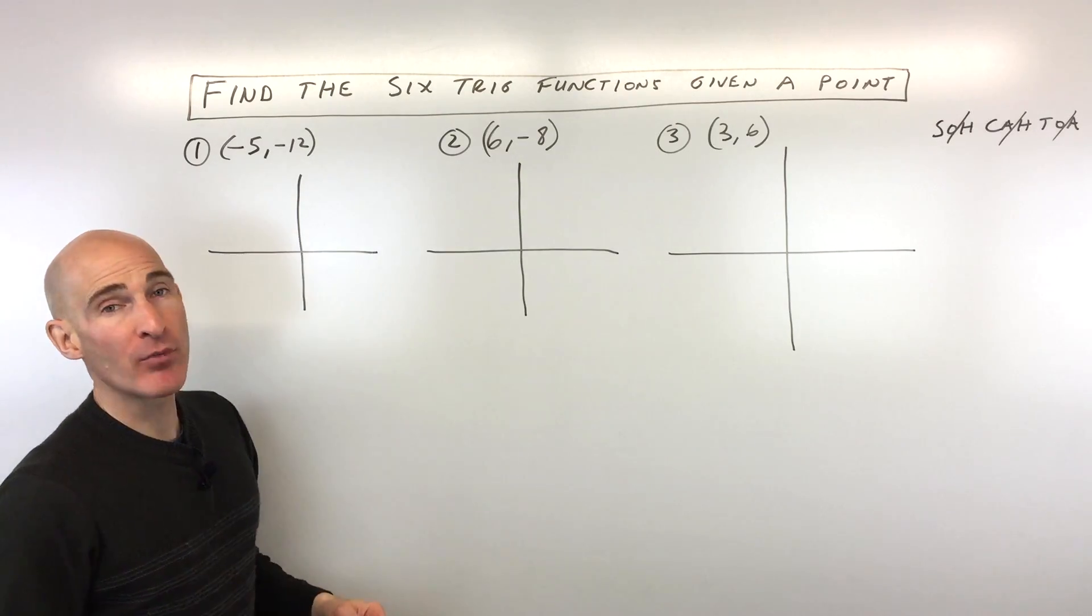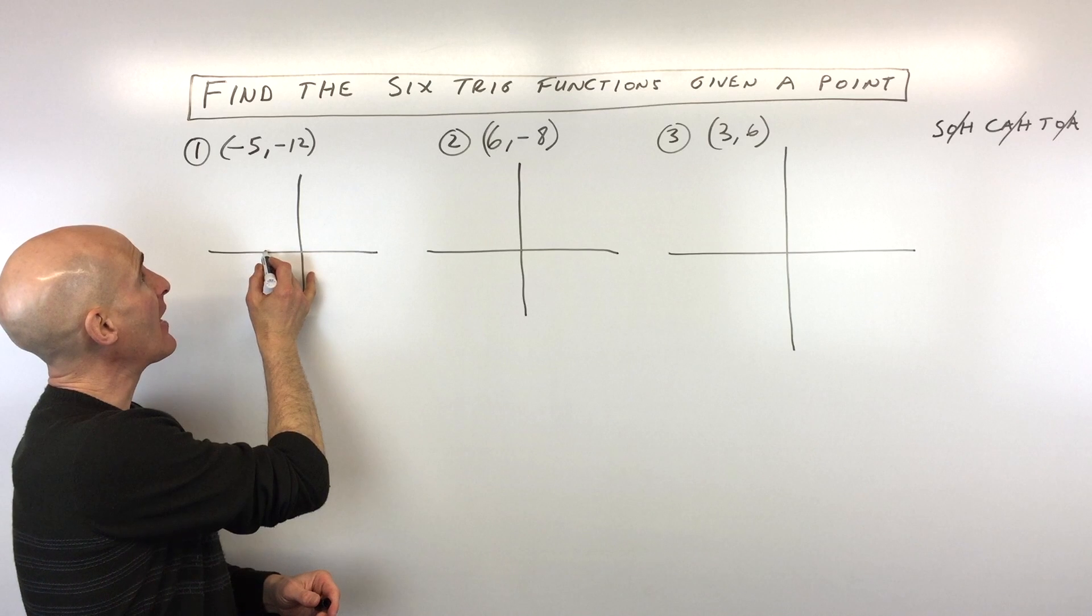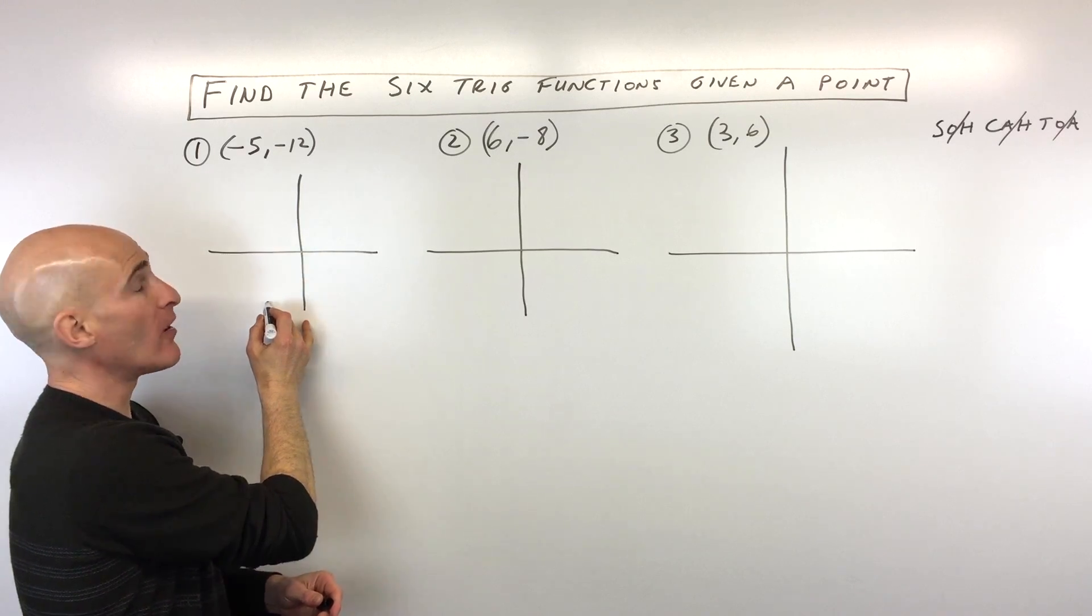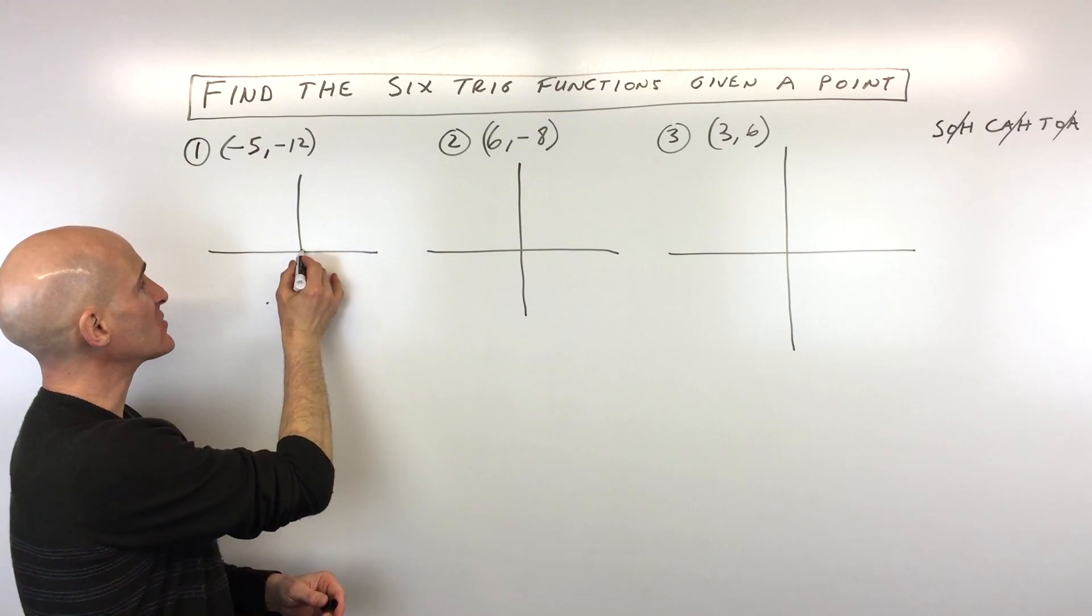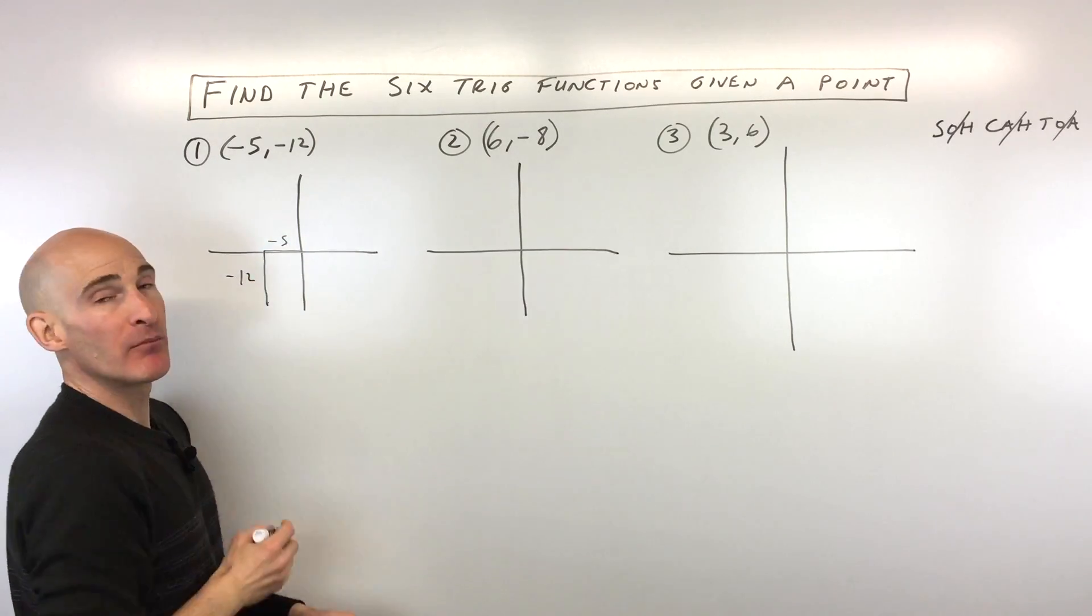The first thing is we want to graph the point. So we've got negative 5, negative 12. You're going to go left 5 on the x-axis and 12 down on the y-axis. So left 5, down 12. Just like you would normally plot a point.